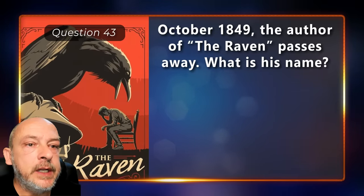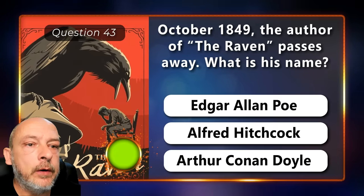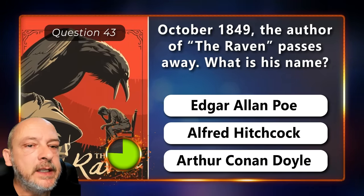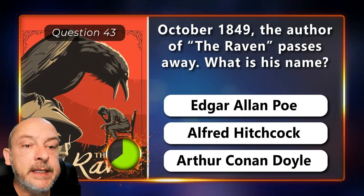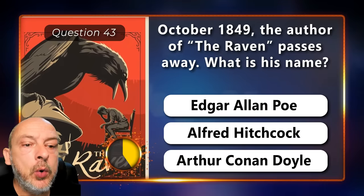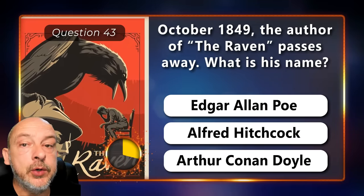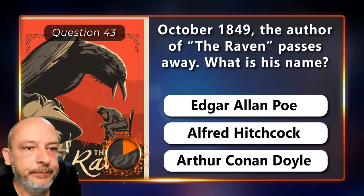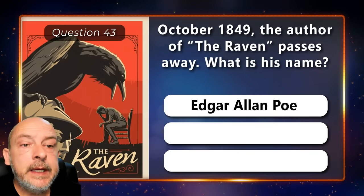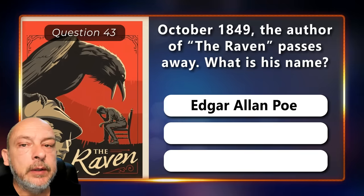October 1849: the author of 'The Raven' passes away. What is his name — Edgar Allan Poe, Alfred Hitchcock, or Arthur Conan Doyle? Edgar Allan Poe.